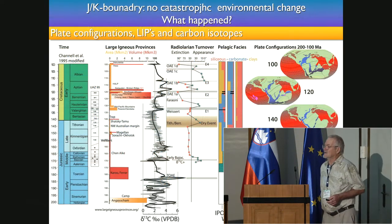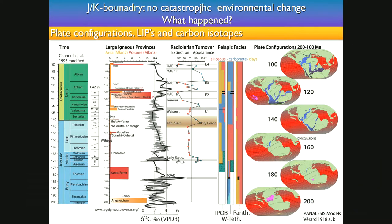First, two slides to show you that nothing major happened — no major catastrophe like at all the other boundaries — at the Jurassic-Cretaceous transition. I don't call it a boundary; it's a transition. The definition has been revised, but it's not placed at some natural break in the record. You can see that the carbon isotopes decline like this. There is no major oceanic plateau or trap or anything. The major traps are in the Triassic and up in the Cretaceous. During this period, there is nothing major.